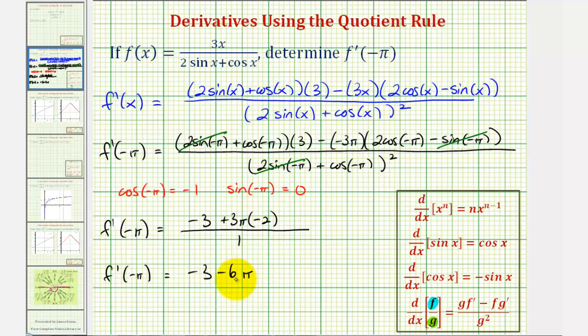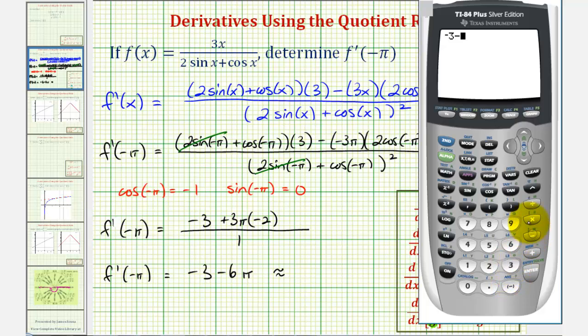And just in case we are asked to round this value, let's go ahead and get our decimal approximation to four decimal places. Just keep in mind we don't want to round unless the directions tell us to. Negative three minus six pi would be approximately negative twenty one point eight four nine six, rounded to four decimal places.